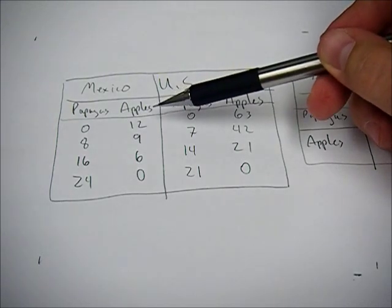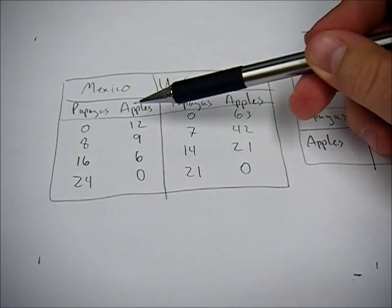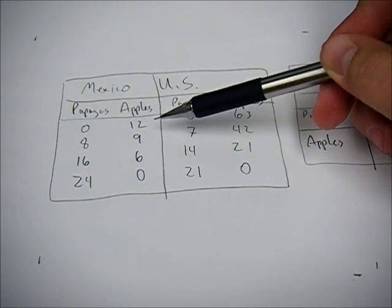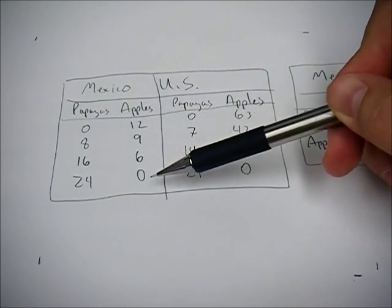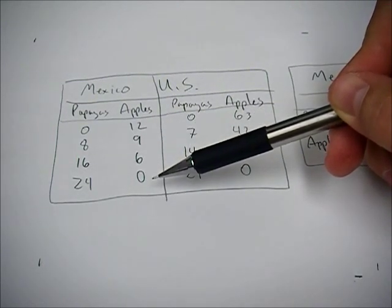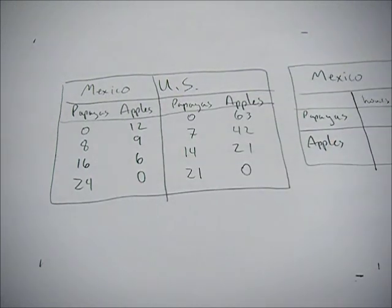You see the same idea going over here in Mexico with papayas and apples. They can specialize in apples or they can specialize in papayas. But whatever they don't specialize in, they're going to produce zero.